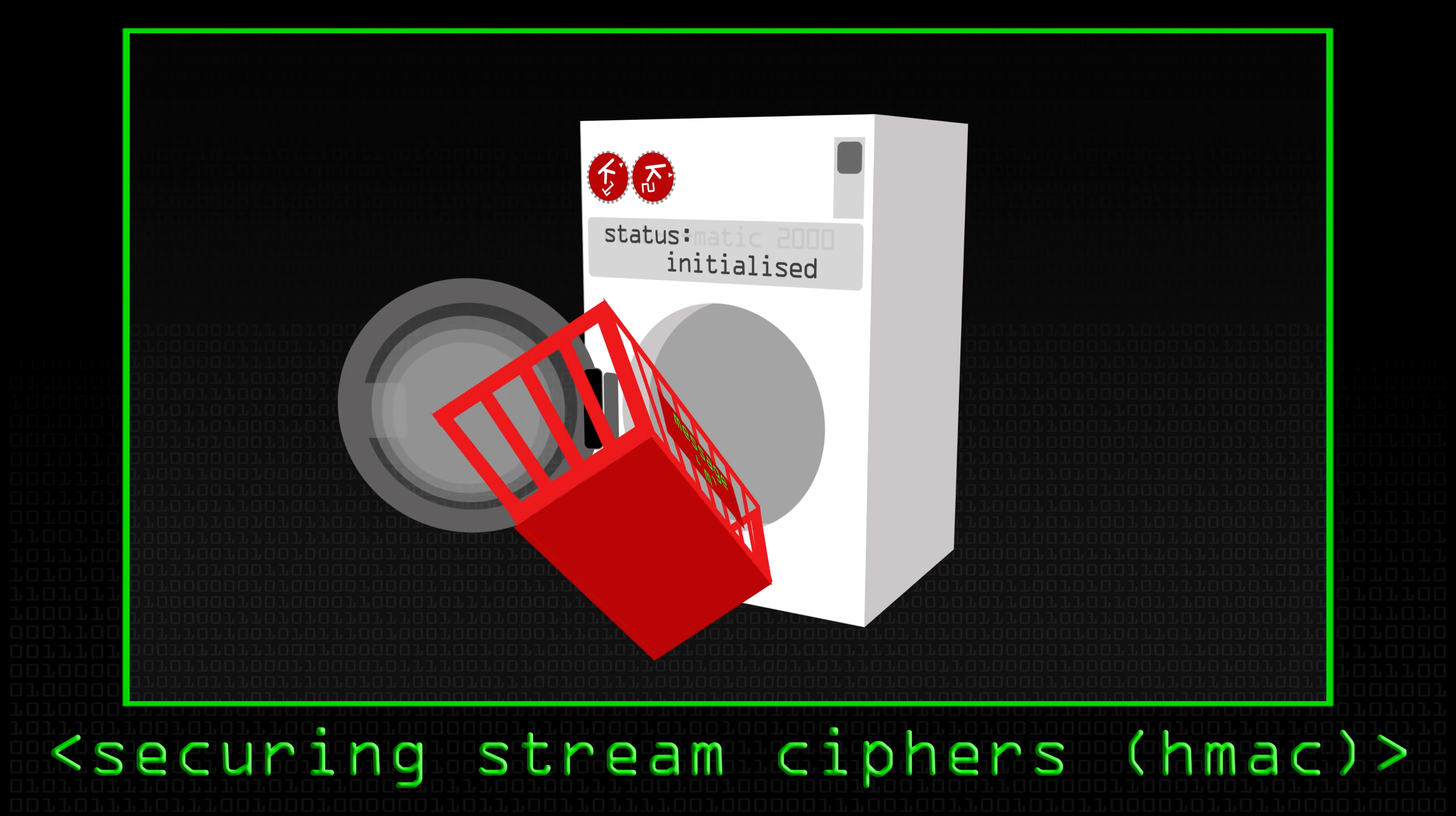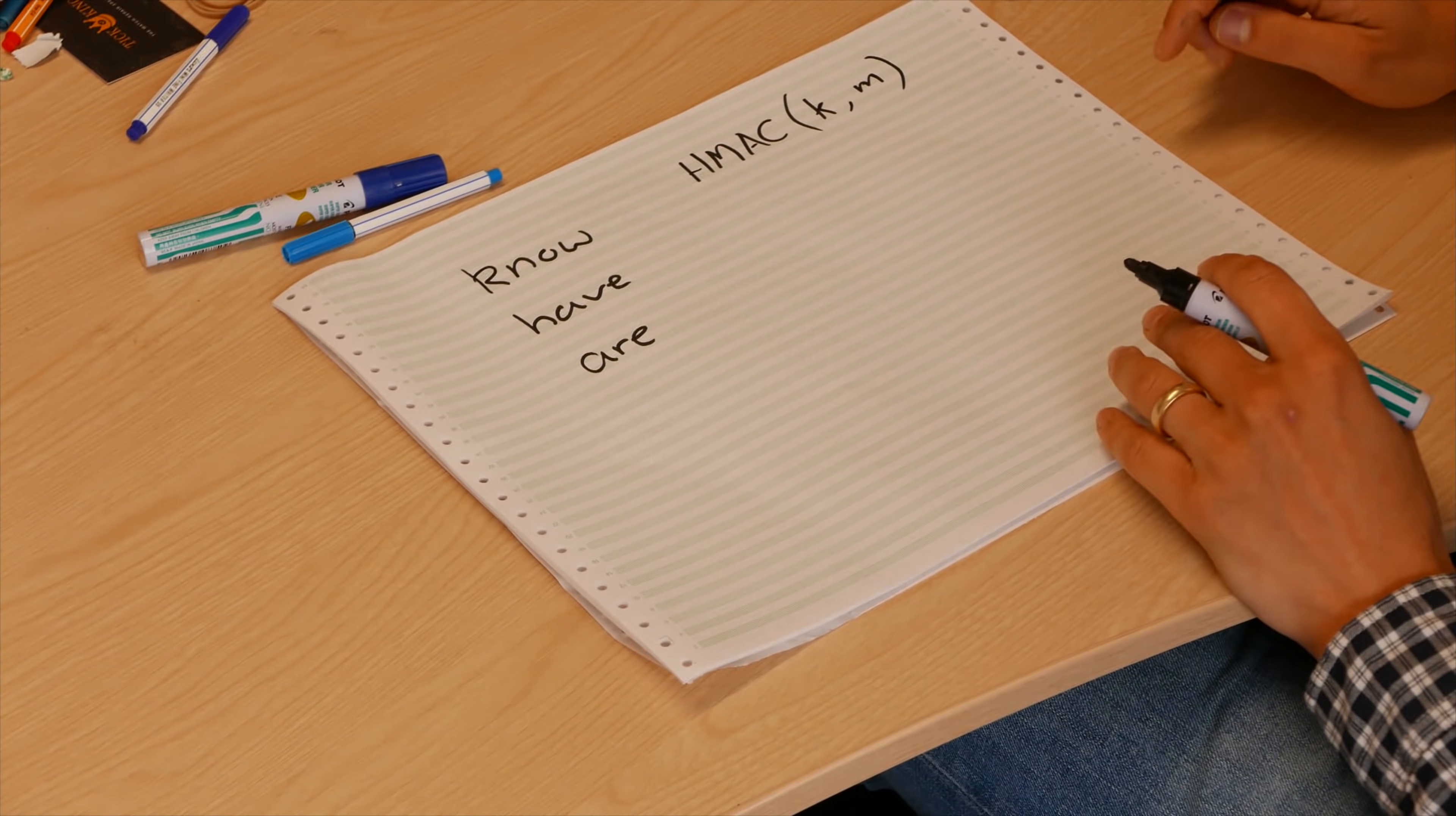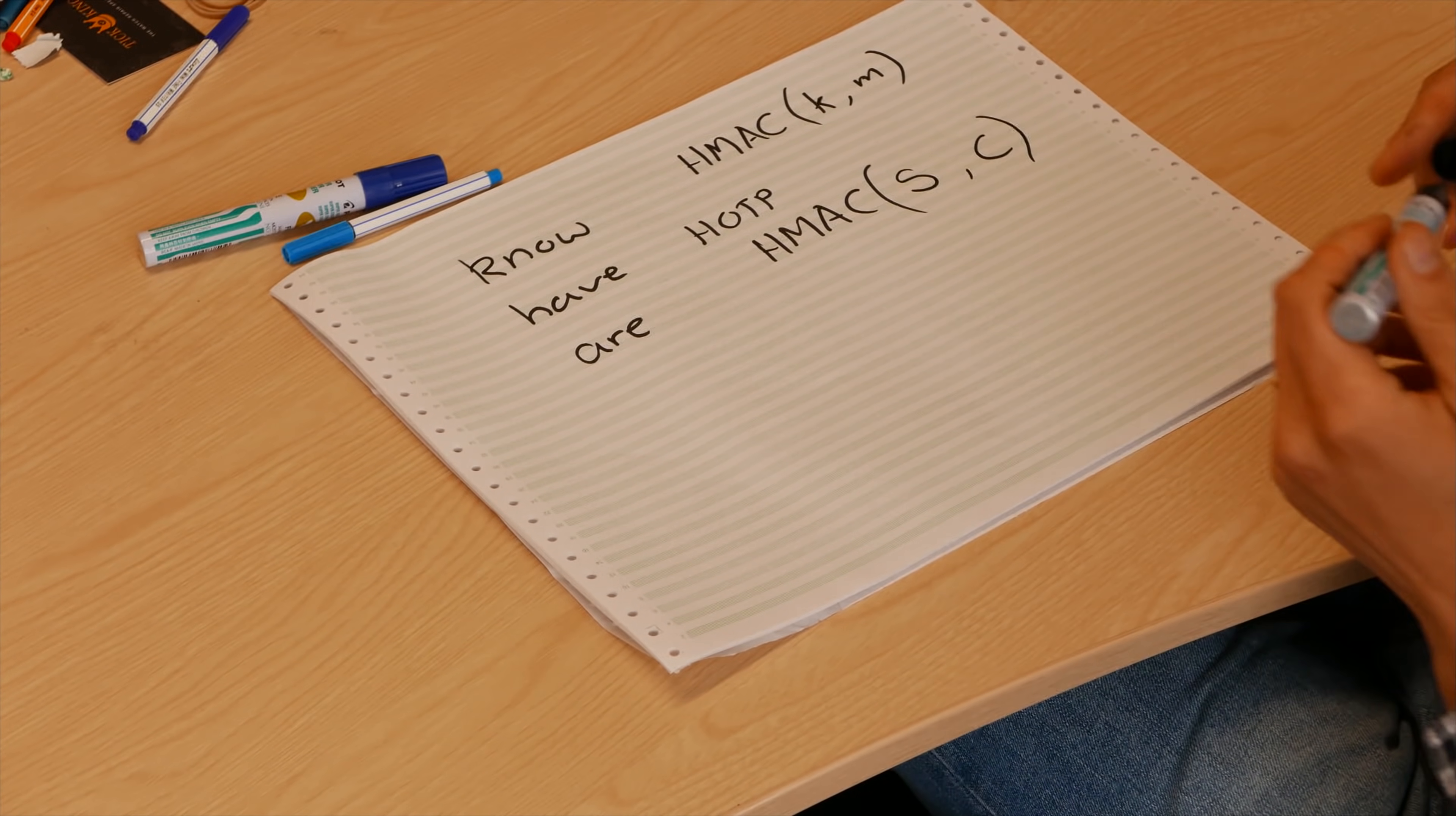So how does that work? Well, it ties back into our message authentication codes that we were talking about in a previous video. We had HMAC with a key which would be used to generate two sub keys (we won't dwell on that) and a message. In hash-based one-time passwords or HOTP, we calculate the HMAC of a secret key S and a counter that we're counting up.